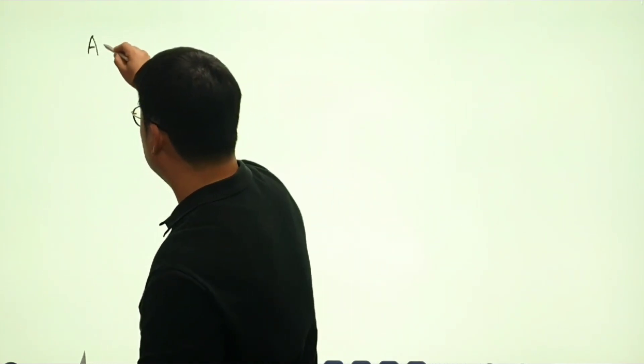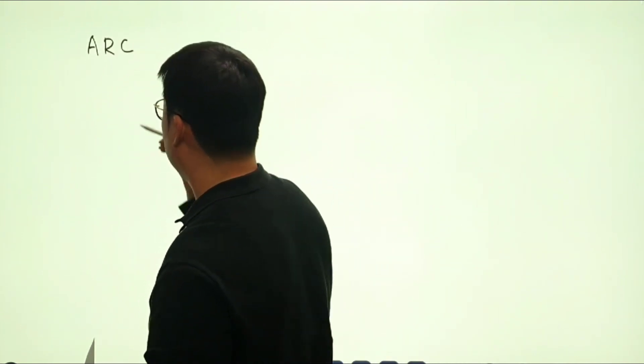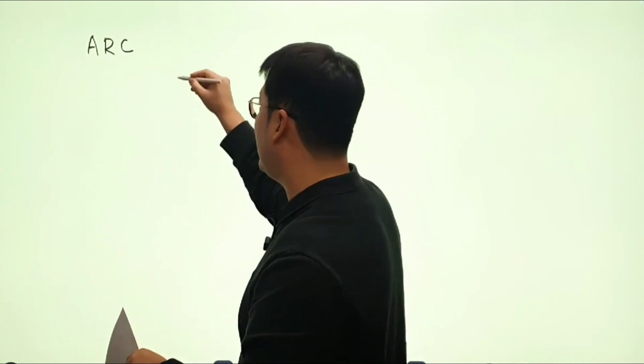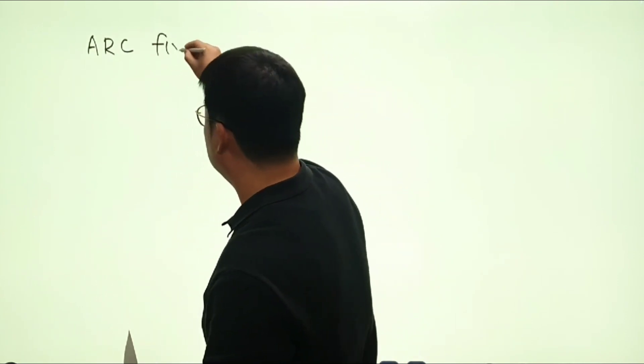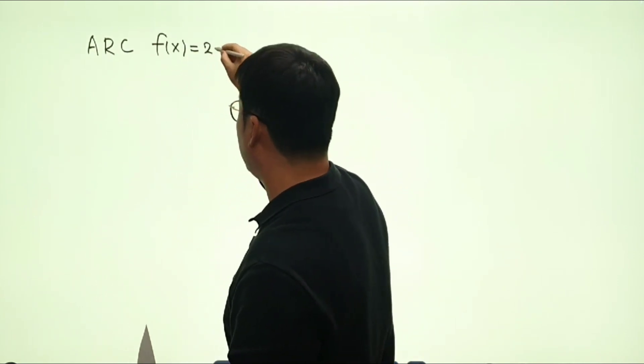So we have to write average rate of change. And what does that mean? Like I got to find f of x, which is going to be 2x squared.